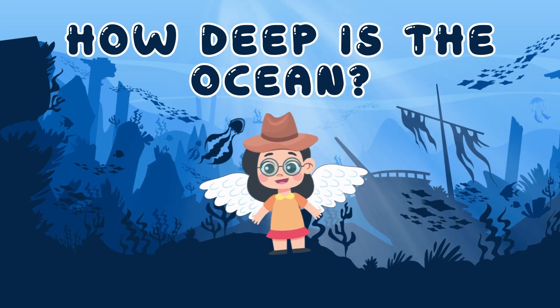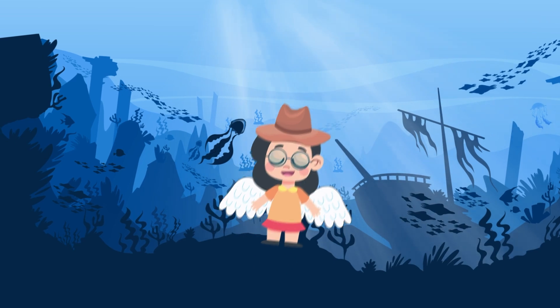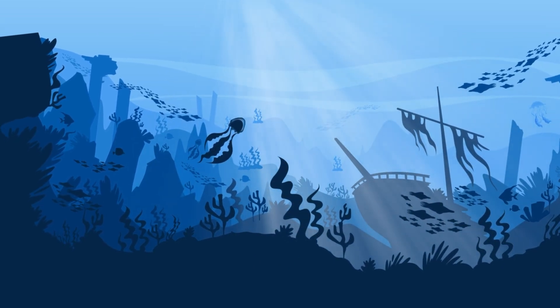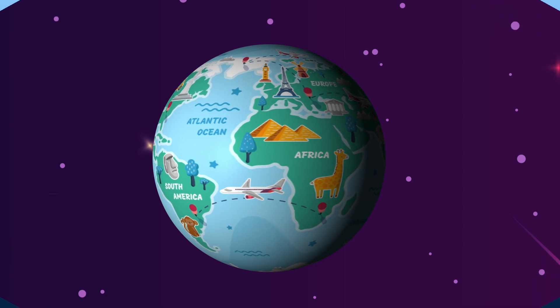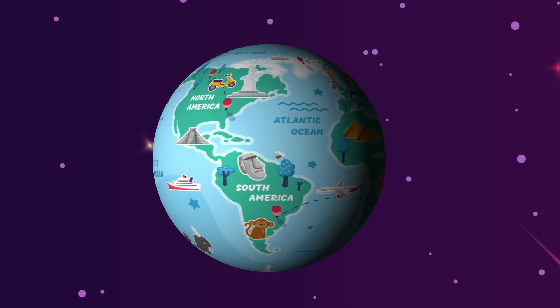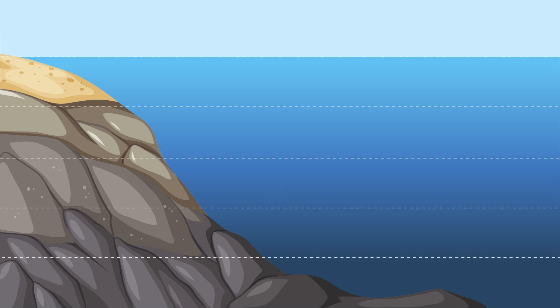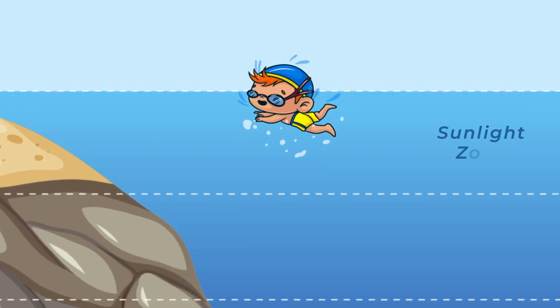Our planet Earth is covered mostly by water, about 70%. That's a lot, right? But did you know the ocean is really, really deep? If we look at the ocean, it has different layers, and the deeper you go, the darker and colder it gets. The top part where we swim is called the sunlight zone and it's nice and bright, but as we dive deeper we move into the darker zones.